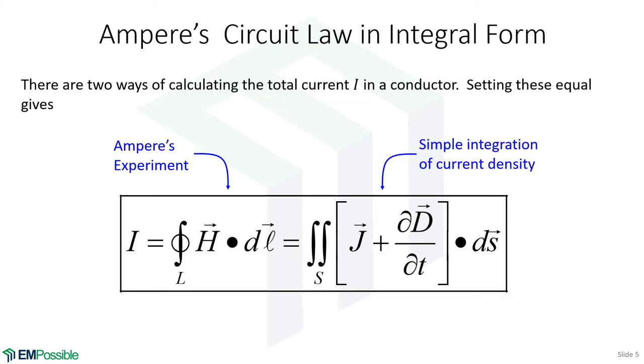So Ampere circuit law in integral form is simply setting both of these methods equal. And the fact that I'm writing I equals on the outside, that's not part of Ampere circuit law. However, I like to write it there to remind us that this is simply two different ways of calculating the total current through some loop.